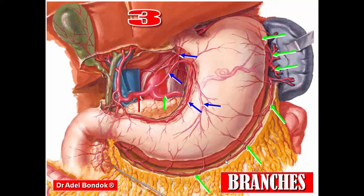The left gastro-epiploic artery is called a gastro-epiploic artery because it gives gastric branches to the stomach and epiploic branches to the greater omentum.